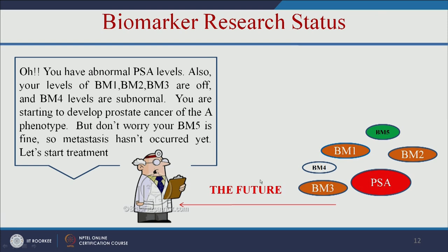In the future, we will be able to tell not only that prostate-specific antigen is overexpressed, but also check what other markers are involved in this expression. Based on that, we can determine BM1, 2, or 3 and give the drug accordingly. For example, markers 1, 2, 3 may be off, marker 4 subnormal, and marker 5 fine — meaning there is no metastasis — so we can go for treatment accordingly.